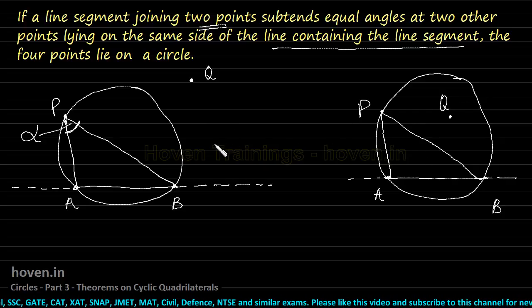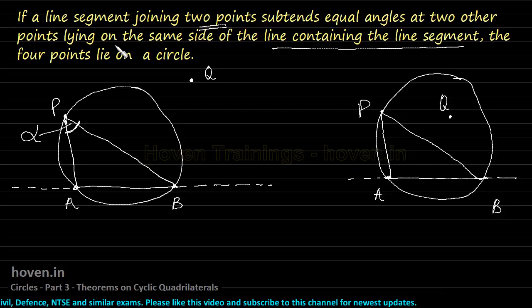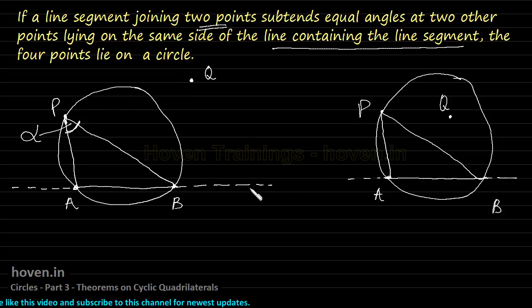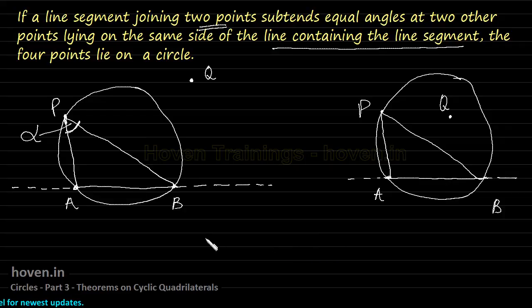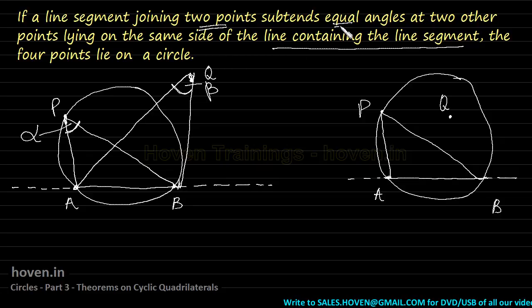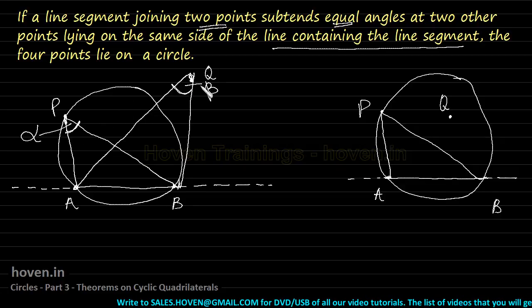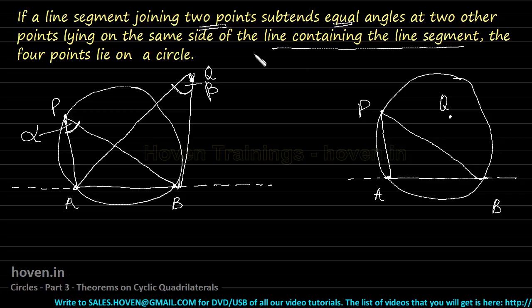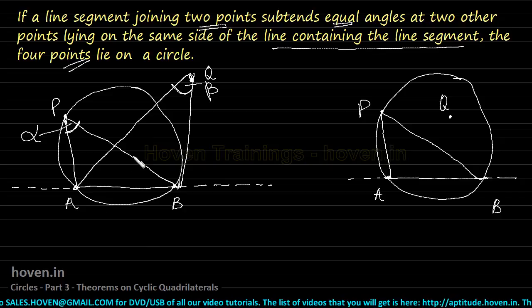P and Q are any two points lying on the same side of line L. The angle subtended at Q is called beta. Alpha and beta are given to be equal. Then we have to prove that the four points P, Q, A, and B lie on a common circle.